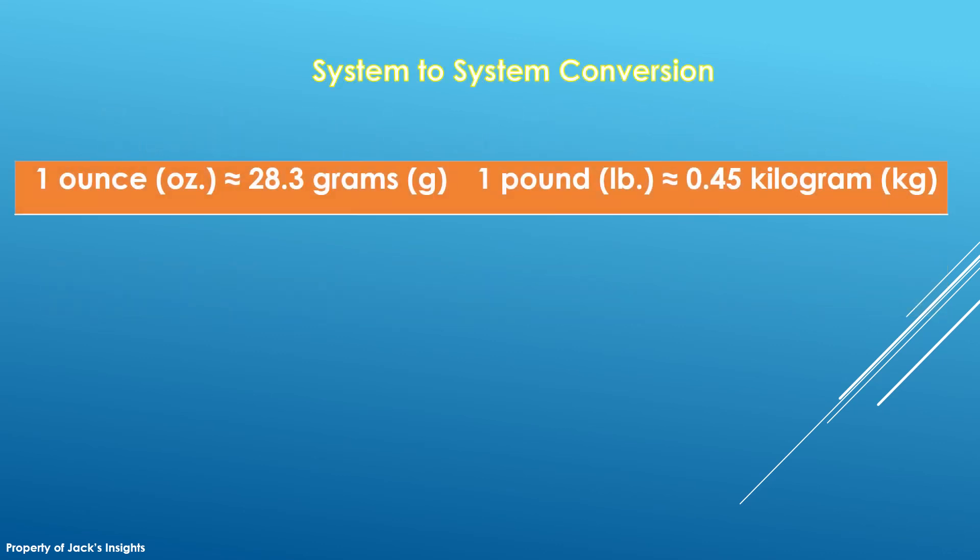In system to system conversion, these are now the basic equivalences of the units in the international system and the English system. 1 oz is approximately 28.3 grams. 1 lb is approximately 0.45 kg.